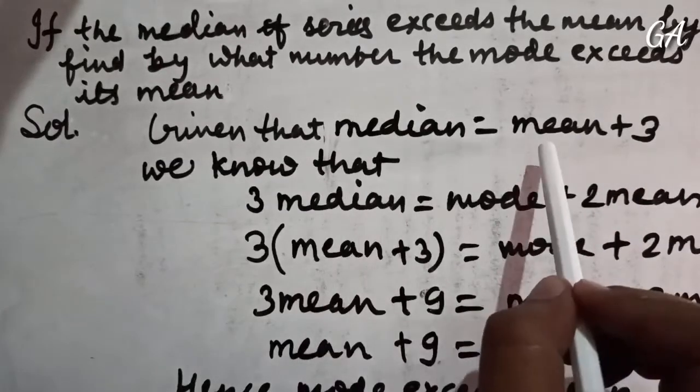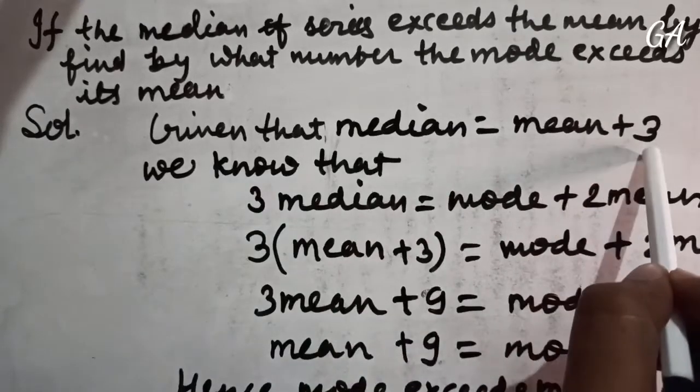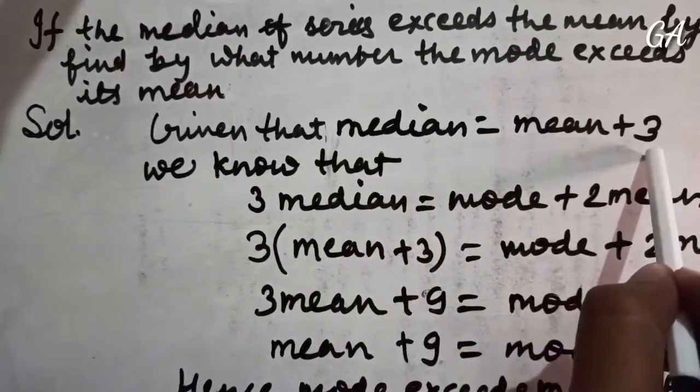Remember that we have to add 3 to the mean because the median exceeds the mean by 3. So we will write: median equals mean plus 3.